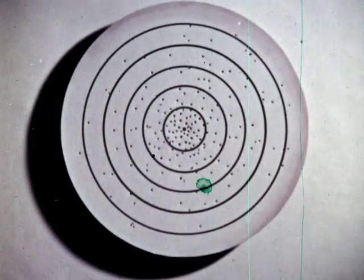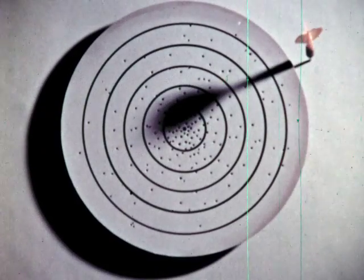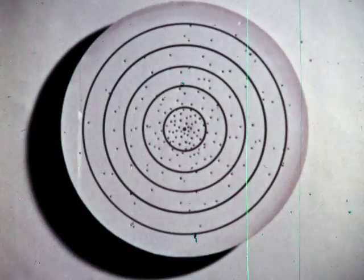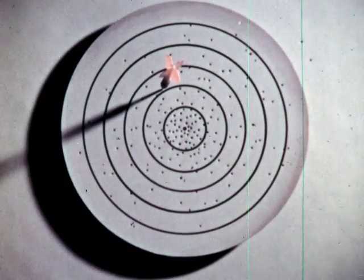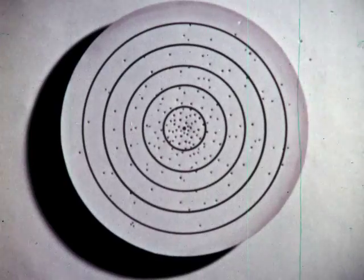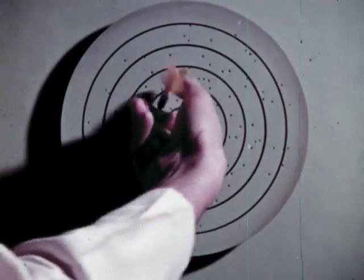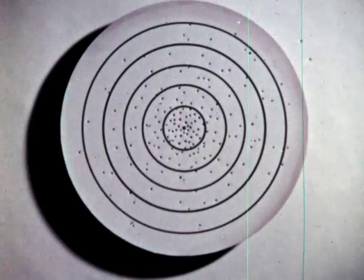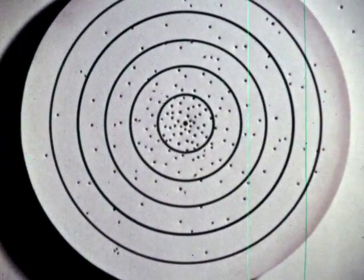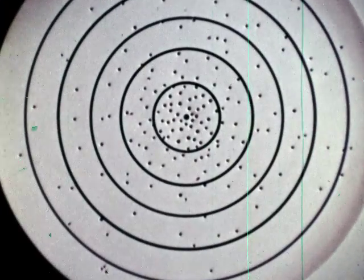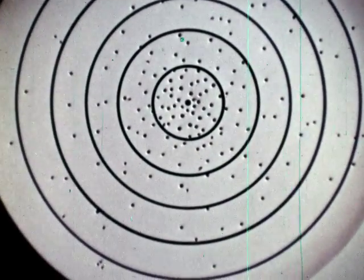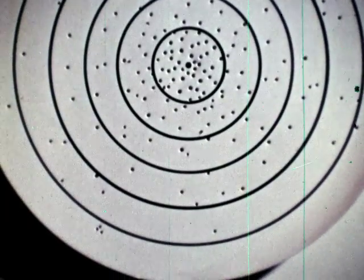A dart board will help us understand the kind of probability information that we get from quantum mechanics. See where the dart hits. Each throw is completely independent of the others. Observe the pattern of punctures. There are many holes concentrated near the bullseye.